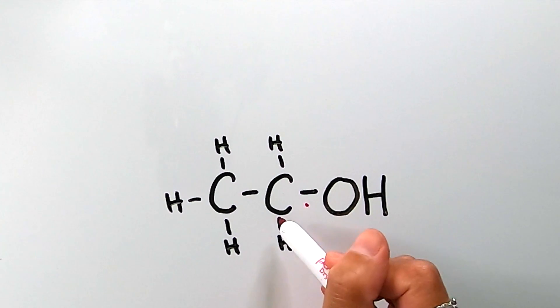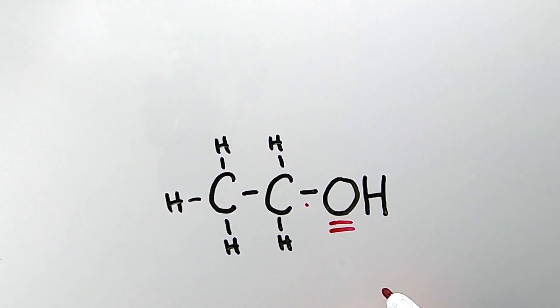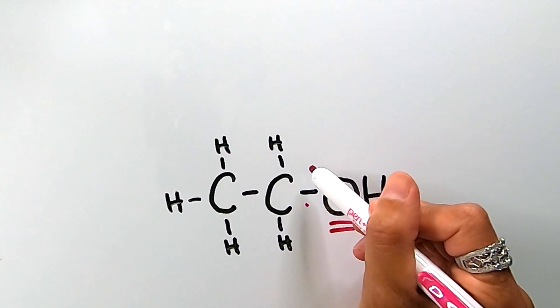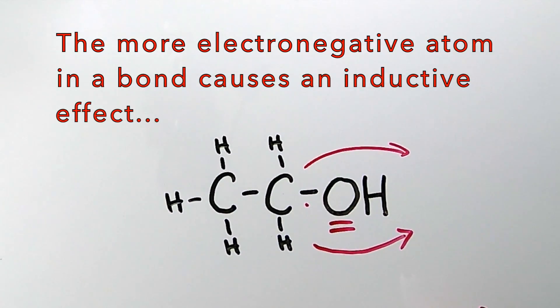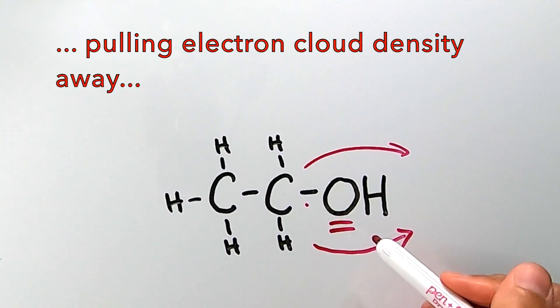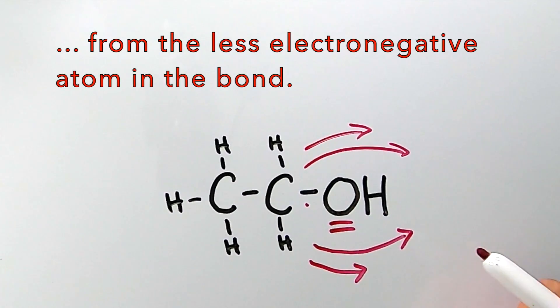Partial charges occur when there's an electronegativity difference between the atoms in a bond. The more electronegative atom tends to create an inductive effect, which is simply the shifting of electron cloud density toward itself. For instance, in this bond between the carbon and the oxygen atom, the oxygen is more electronegative than the carbon, so it tends to withdraw electrons from the carbon's electron cloud. This is known as an electron withdrawing group — it shifts the electron cloud from the carbon toward the oxygen.